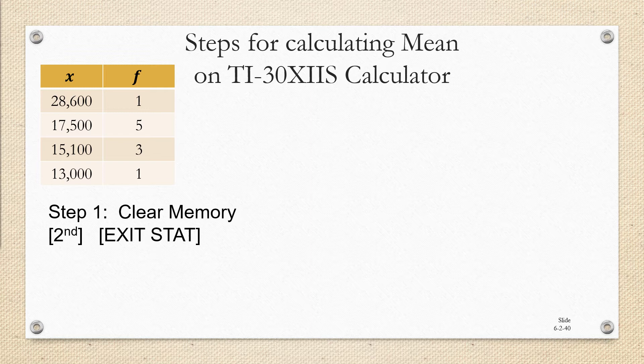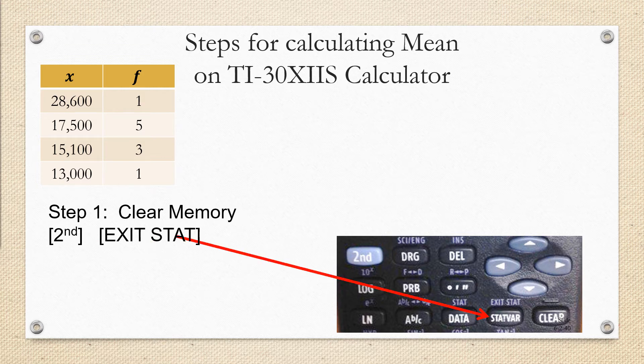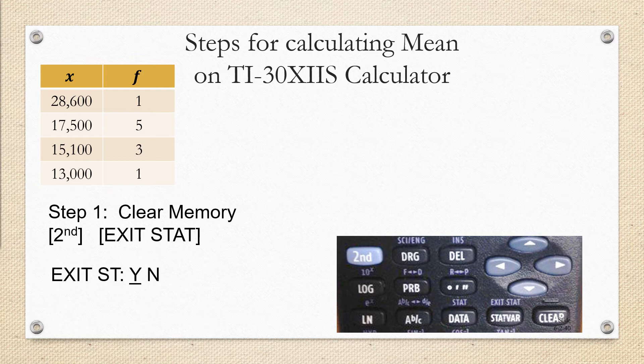The first step for calculating the mean of this frequency distribution on your TI-30X2S calculator is to make sure that any data you may have previously entered has been cleared out. One way to do this is to hit second exit stat. So you're going to push the second button and then exit stat, which exits the statistics mode, and that's above the stat var key. So you're going to click the stat var key next. Now you should see on your screen exit stat yes or no, and the yes will be underlined, and that's what we want to do. So all you have to do is click enter.